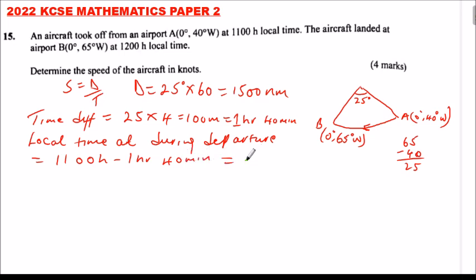When you do that, it means if you subtract 1 hour 40 minutes, the local time at B was 09:20 hour.